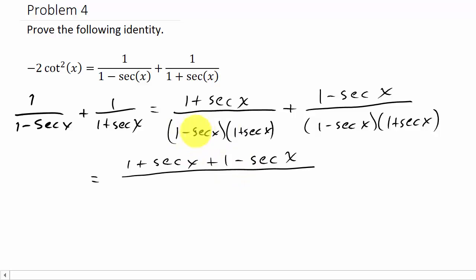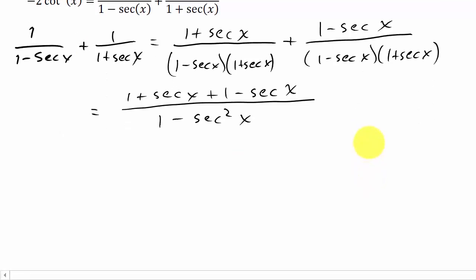So if I FOIL this, that's going to be one, and then secant x minus secant x is zero, and then negative secant x times secant x is minus secant squared x. All right, so now you can see secant x cancels, and so that's going to leave me with two over.